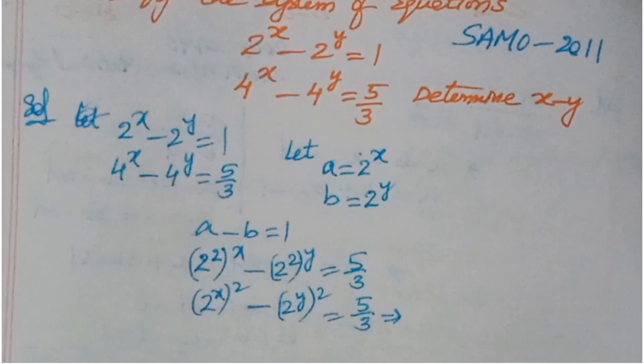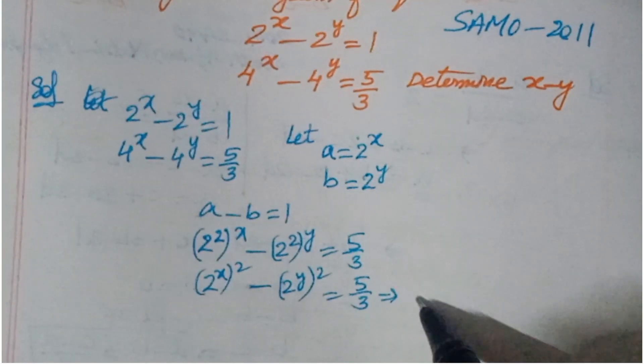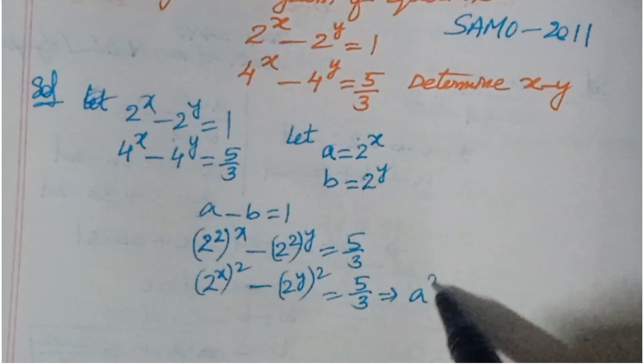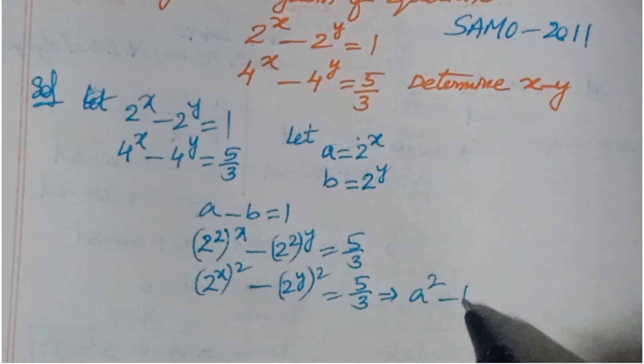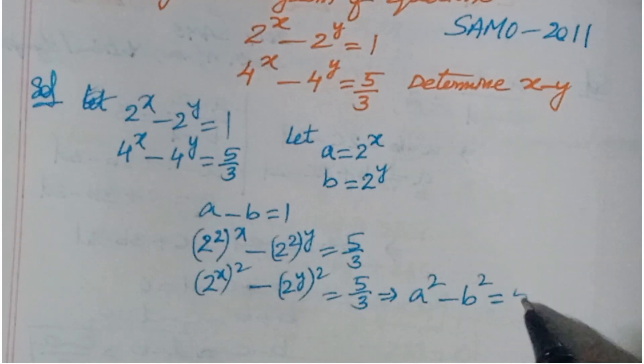The second equation 4^x minus 4^y equals 5/3 can be written as (2^x)² minus (2^y)², which gives us a² minus b² equals 5/3.